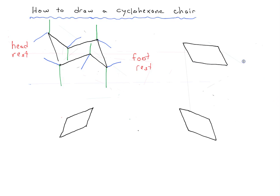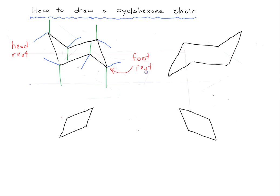Just like we did before, we're going to draw a flap — a triangle pointing a little bit off to one side — and also another flap pointing off to the bottom. Again we have these nice concave angles that help guide the way. The parallelogram is going to be the core of the chair, and the flaps represent the footrest and the headrest. After erasing the guidelines, we draw in the axial groups: the footrest gets an axial group pointing straight down, the headrest gets one pointing straight up, and then we alternate up, down, up, down around the ring.